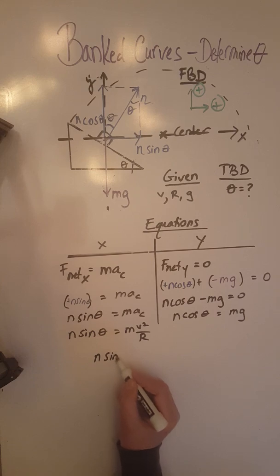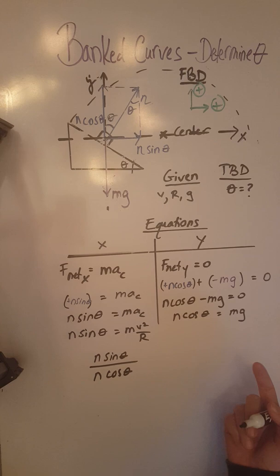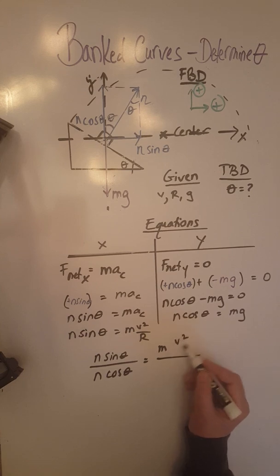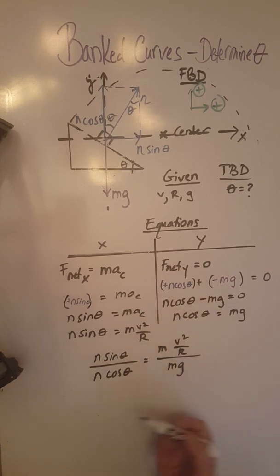n sine theta divided by n cosine theta, so that's division of the left hand sides, equals division of the right hand sides, which we have here m v squared over r, and here we have mg. So this is very nicely going to help us get rid of the normal force and the mass of the object.